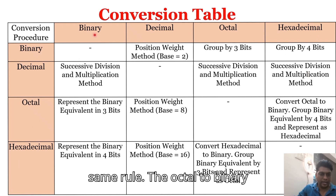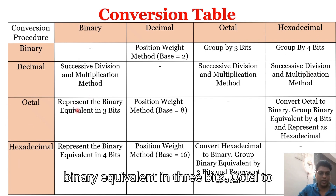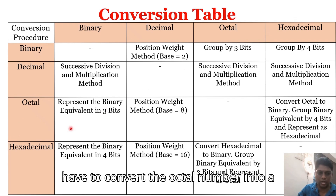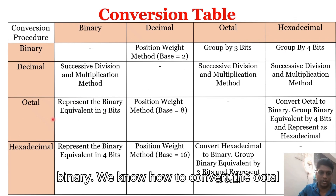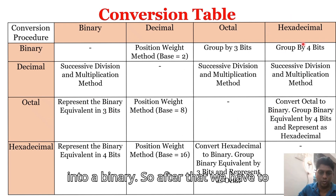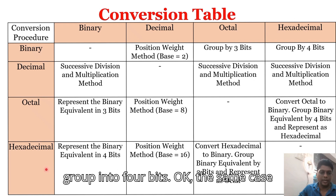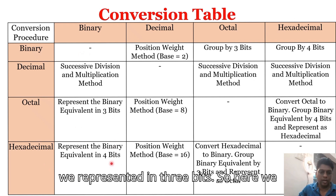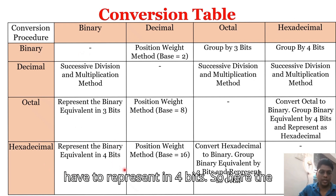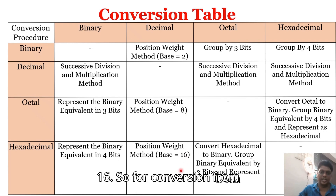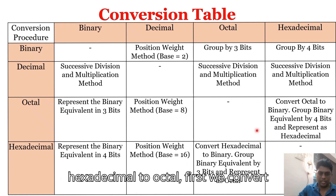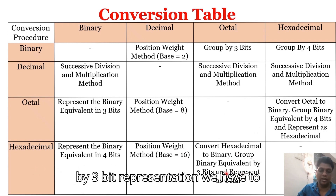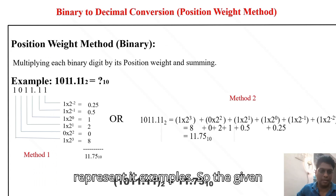For octal to binary conversion, represent the binary equivalent in three bits. Octal to decimal uses the position weight method. For octal to hexadecimal, first convert octal to binary, then group into four bits. For hexadecimal to binary, represent in four bits using base 16. For hexadecimal to octal, convert hexadecimal to binary first, then use three-bit grouping.